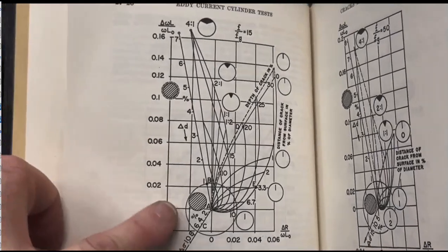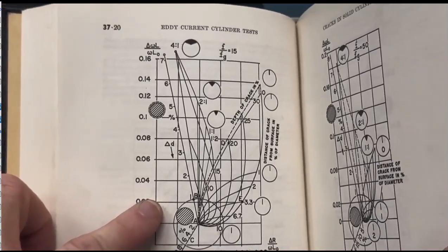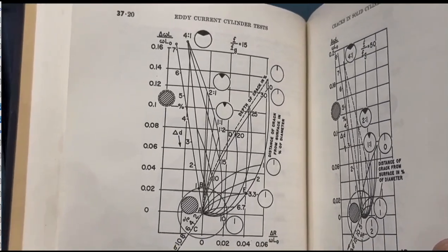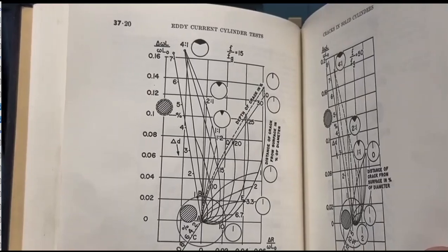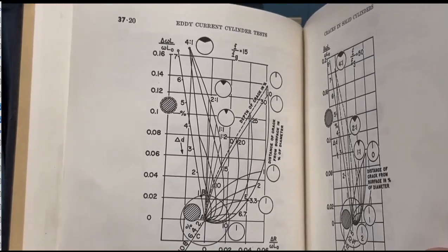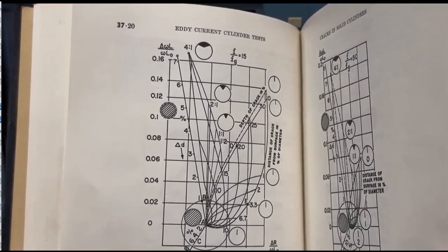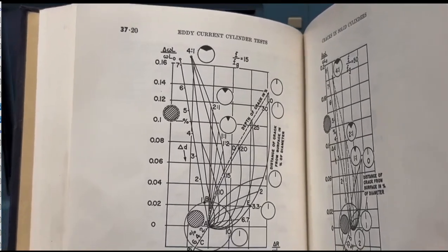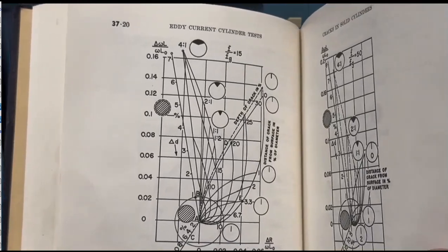So when you look at these impedance graphs, the first thing you have to ask is what is he trying to tell us. So in this impedance graph, he is trying to explain the effect of flaw diameter, as well as flaw depth below the surface, the effect that that has on signal phase and amplitude.